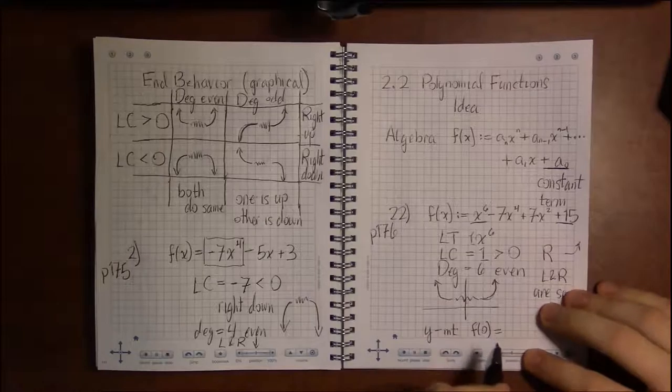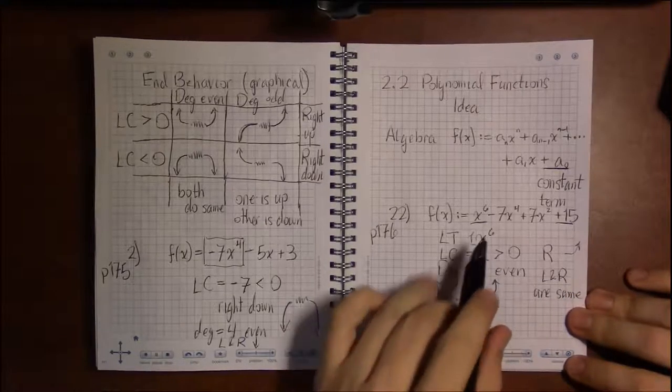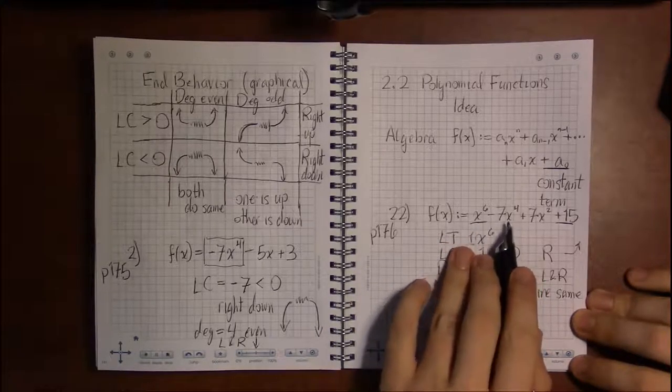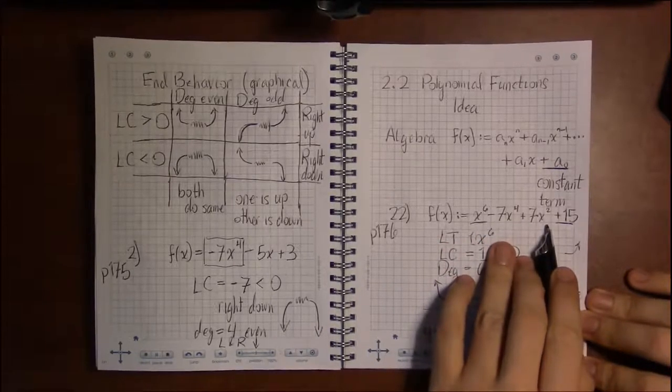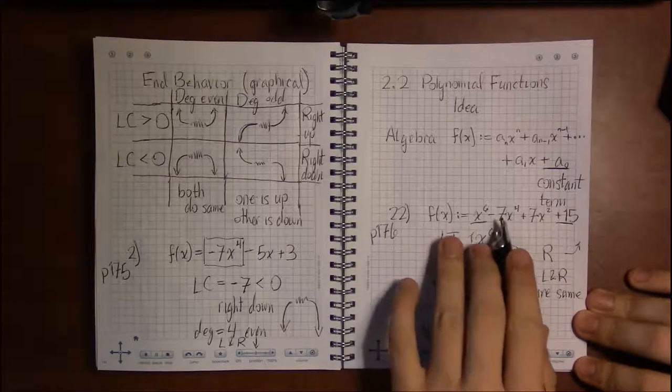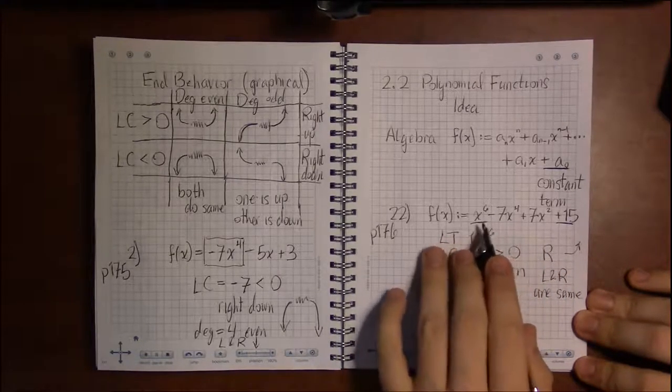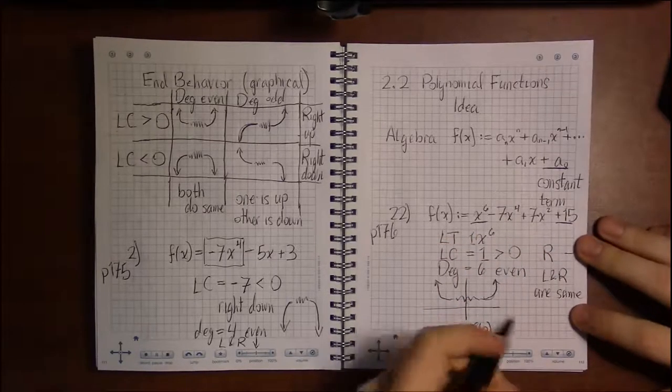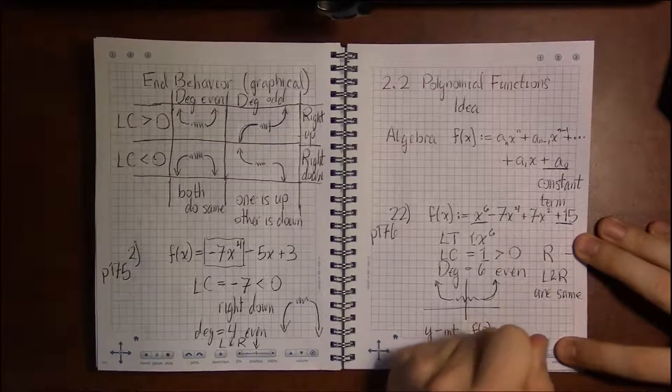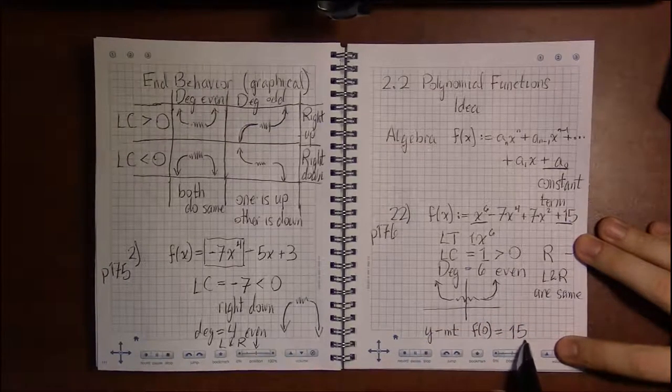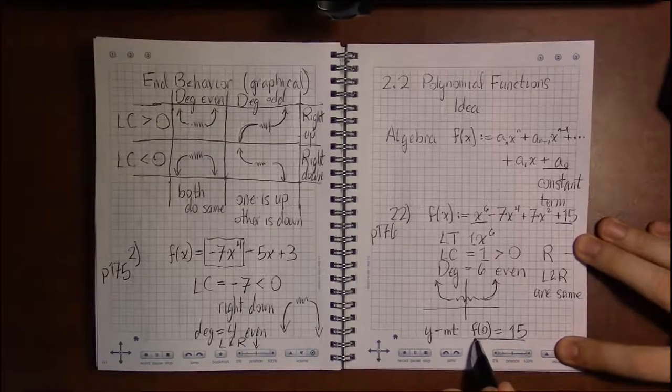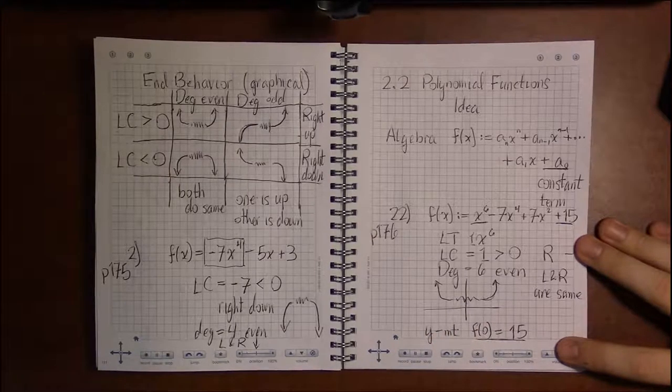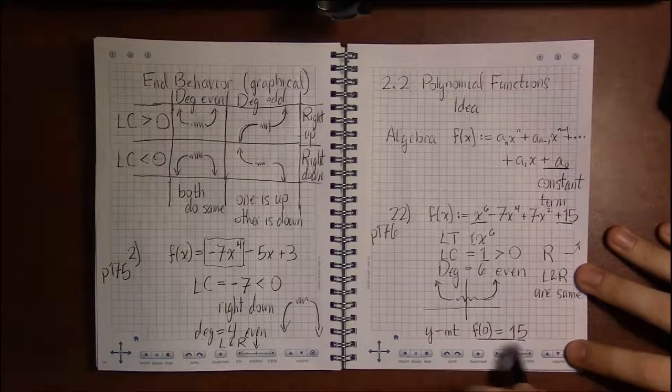Well, if we plug 0 in for x, 0 to the 6th is 0, 0 to the 4th is 0, 0 squared is 0, so we've got 0 minus 7 times 0—that's 0. We've just got a bunch of zeros here. The only thing that's not going to be 0 is the 15, the constant term. So this tells us it's going to hit the y-axis at y equals 15.